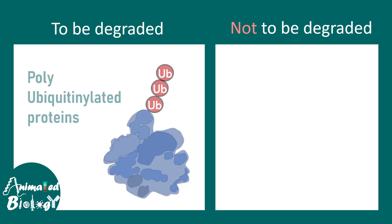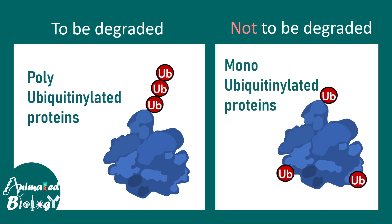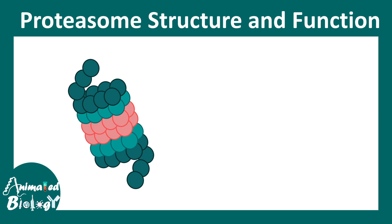It's important to note that polyubiquitinated proteins are destined to be degraded — the polyubiquitin tag is interpreted as a signal for degradation. However, monoubiquitinated proteins might not be degraded; it's basically a protein modification that doesn't necessarily signal degradation, whereas a polyubiquitin tag does.